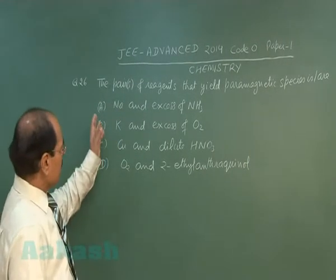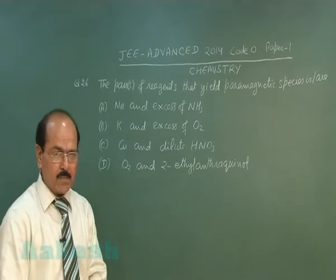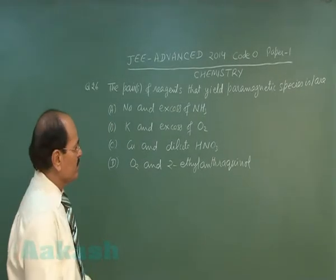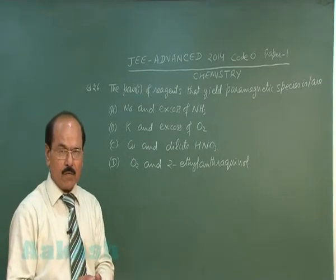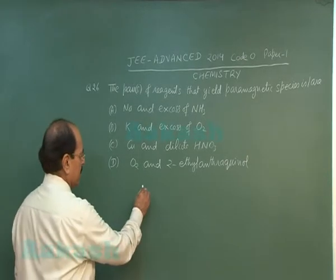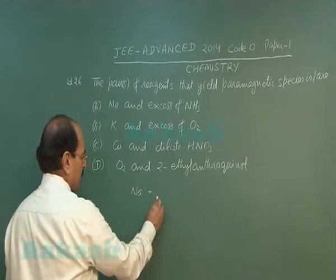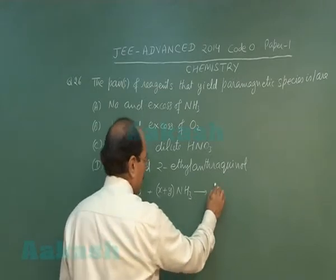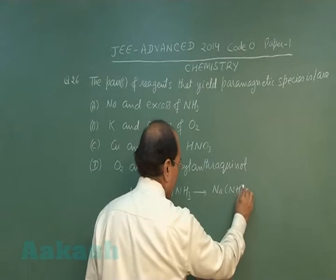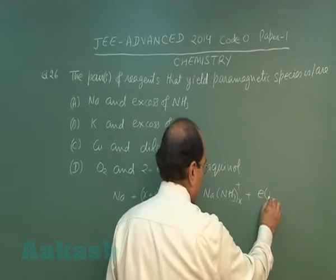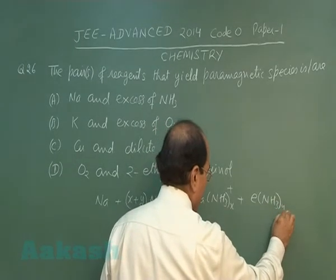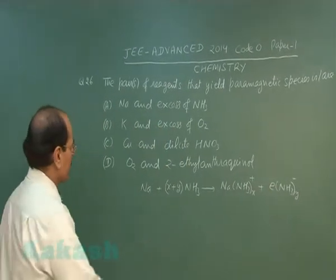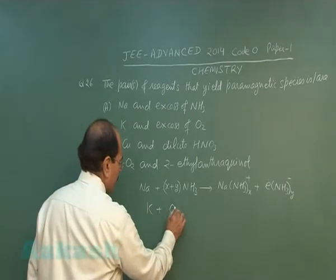Question number 26 reads: the pairs of reagents that yield paramagnetic species are. Sodium with excess ammonia will have a blue color due to solvated electrons, so this solution will be paramagnetic. Sodium plus ammonia will have solvated electrons, and due to the solvated electrons the solution will be paramagnetic.